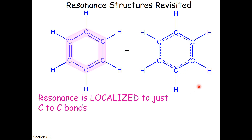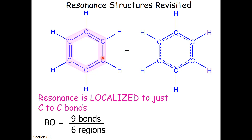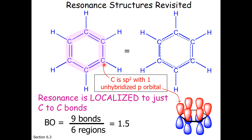Notice that resonance is localized to just the carbon-carbon bonds — there is no change in the carbon-hydrogen single bonds. So this is what would be called localized delocalization. Yes, there truly is such a thing, and perhaps you remember seeing that before when you were getting the bond order of the carbonate ion. The bond order for this benzene ring would be nine bonds within this six-membered ring and six bonding regions, so the bond order would be 1.5, which is what you would get if you averaged a double bond and a single bond.